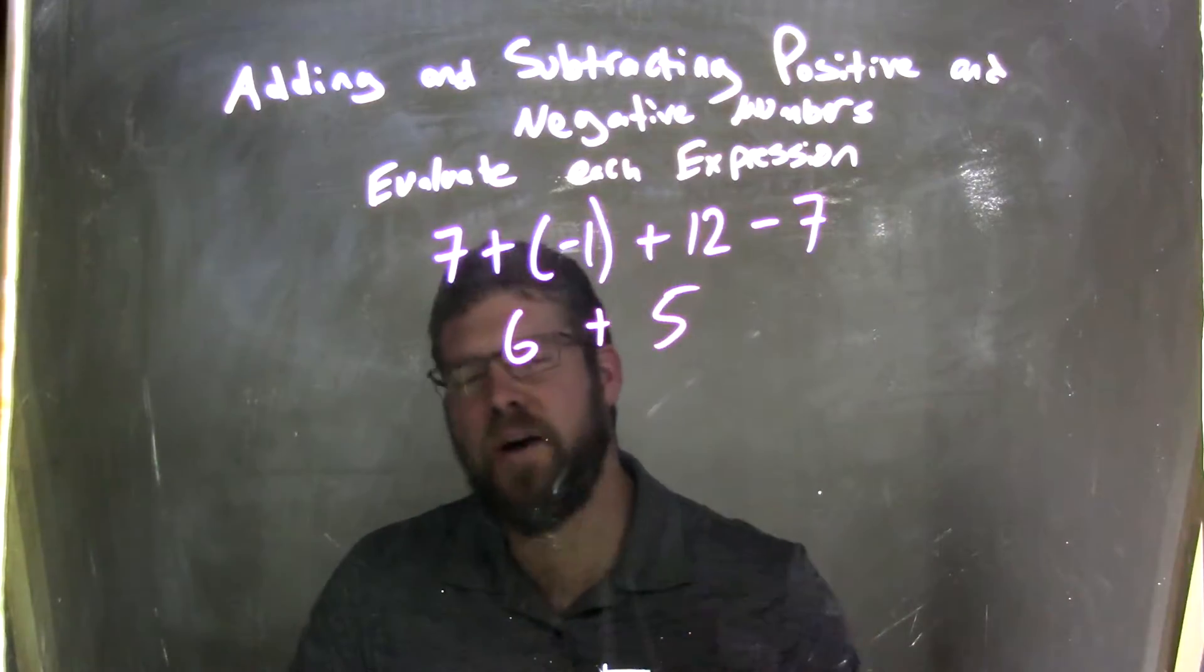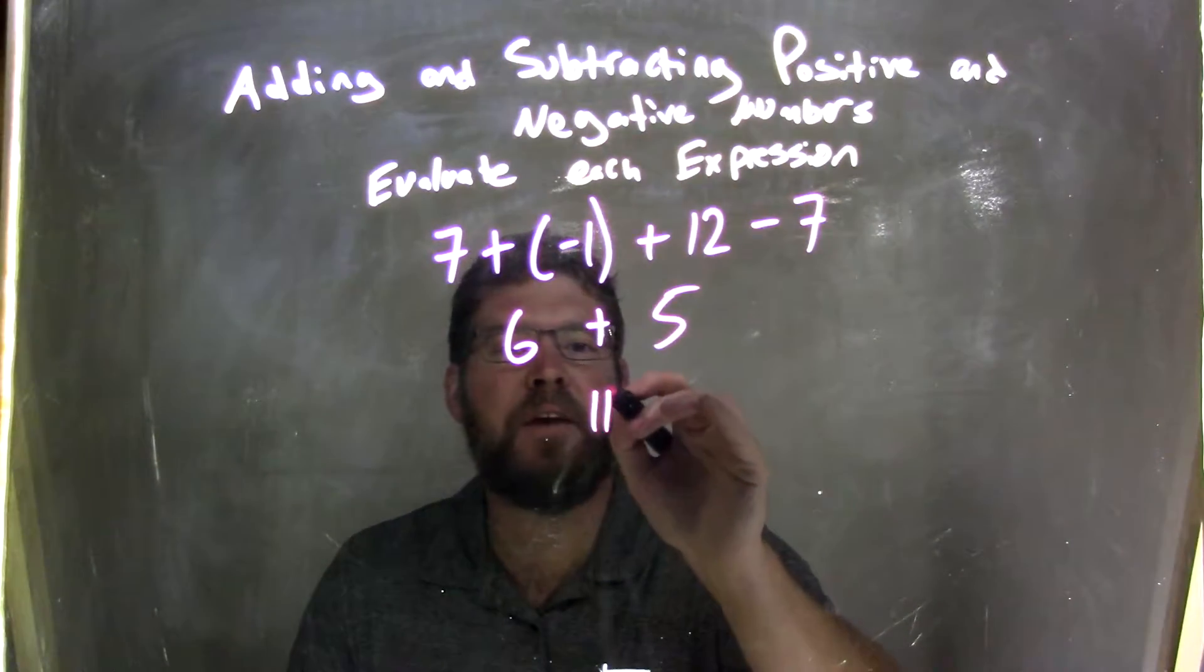We have now 6 plus 5. 6 plus 5 is 11, and we are done.